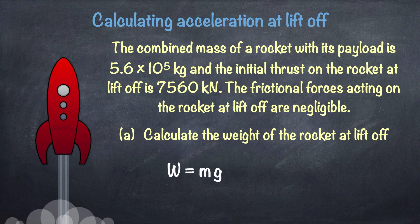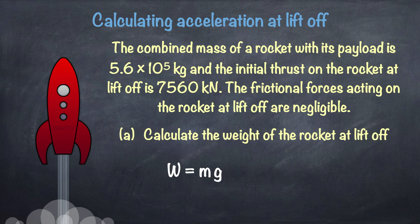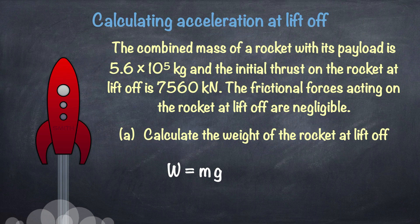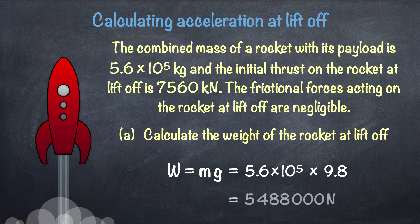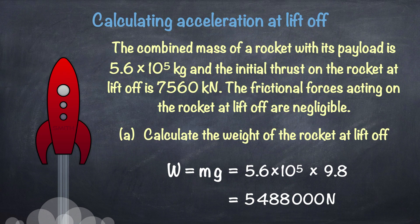M is the mass in kilograms, and G is the gravitational field strength of the planet the rocket's lifting off from. We'll imagine that's Earth here, so G would be 9.8 newtons per kilogram. Substituting our values into the equation gives 5.6 times 10 to the power of 5 times 9.8, which works out to be 5,488,000 newtons. To two significant figures, we can write that as 5.5 times 10 to the power of 6 newtons.